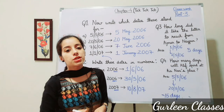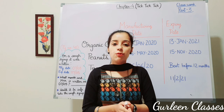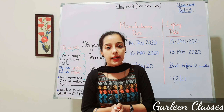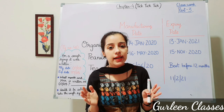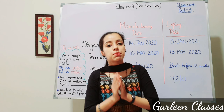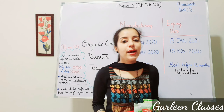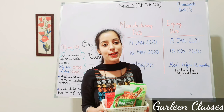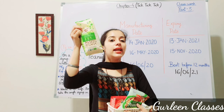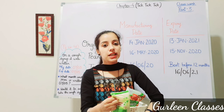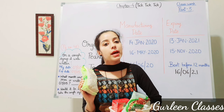Now let us start the new topic: Manufacturing Date and Expiry Date. Manufacturing date means when that particular item was made, and expiry date means when it should no longer be used. I went to a grocery store and purchased some items. The first item is organic chana.